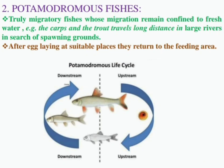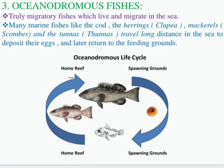Amphidromous fish have a mixed life cycle. Potamodromous fish migrate entirely within freshwater. Ocean examples of migration include Tuna and Scomber, which migrate within the ocean. This fish is called Oceanodromous fish.